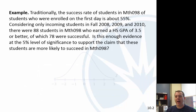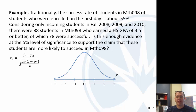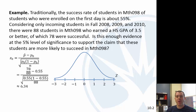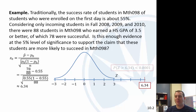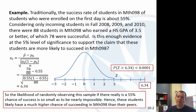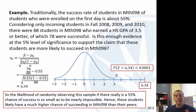Here's a visual of the normal z-distribution. We calculate 78 over 88 minus the null proportion 0.55, divided by the standard deviation, and get about 6.34. You have to extend your chart way over to reach 6.34, and the probability of being greater than that is basically zero. This is essentially an impossible event under the null, so these students really probably have a much higher chance of succeeding in Math 98.